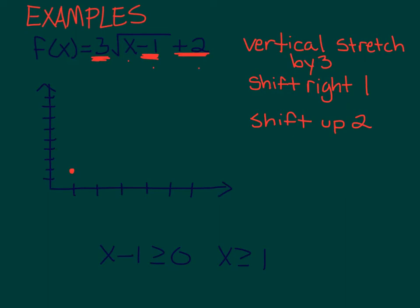Alright, when x is 2, 2 minus 1 is 1, square root of 1 is 1, 1 times 3 is 3, 3 plus 2 is 5. So on our parent function, we went over 1 and up 1, but now we're going over 1 and up 1, 2, 3 because we've stretched it by a factor of 3.